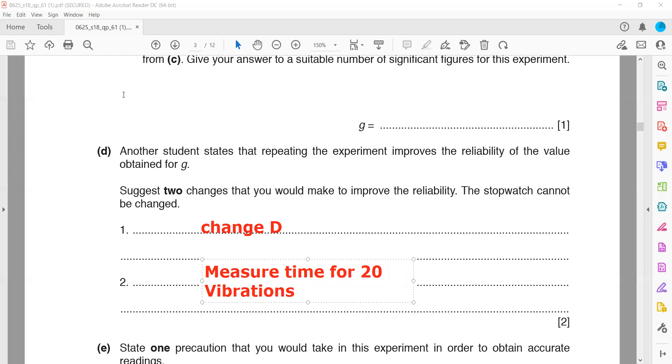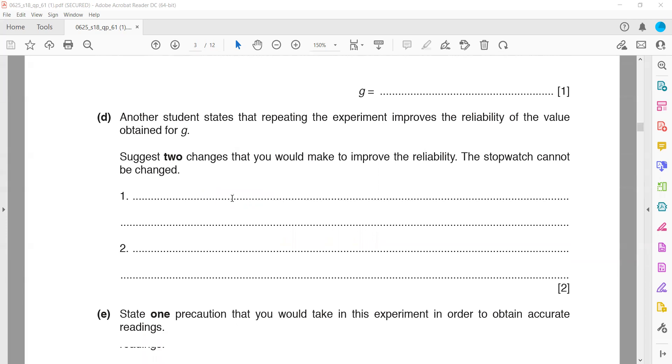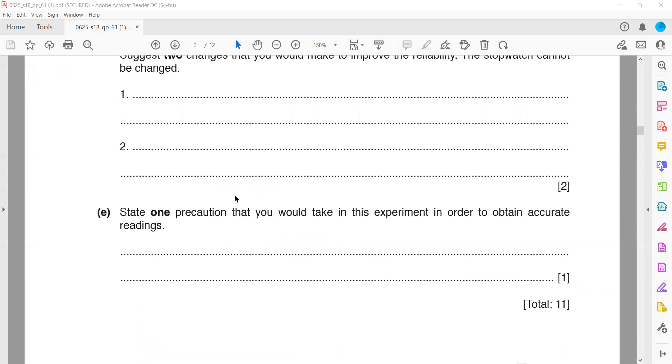First we were measuring time for 10 vibrations, but measuring time for 20 vibrations will increase the experimental accuracy. By changing or using different values or greater values of distance and measuring time for 20 vibrations, we will increase the experimental accuracy and improve the reliability of the results.